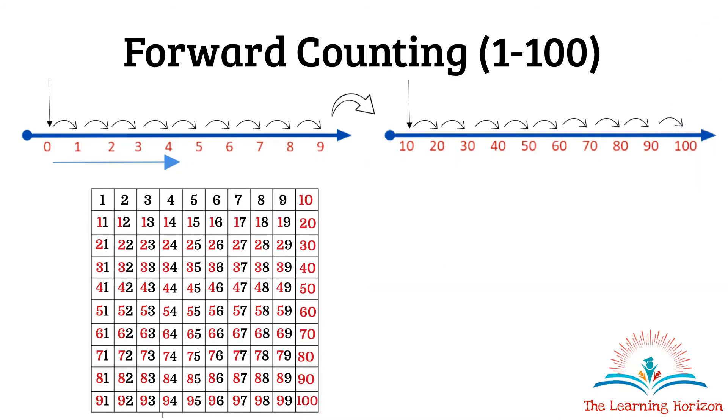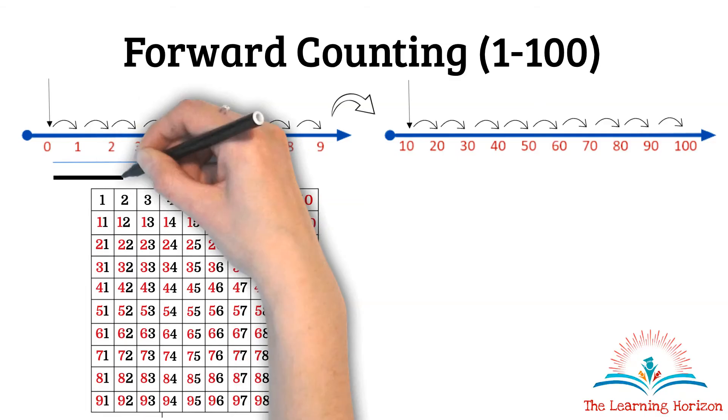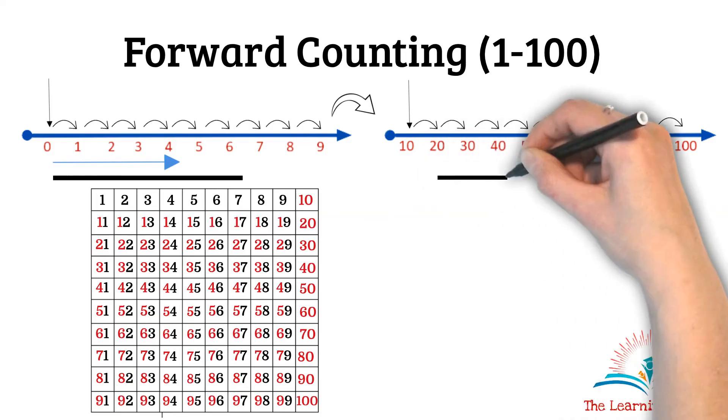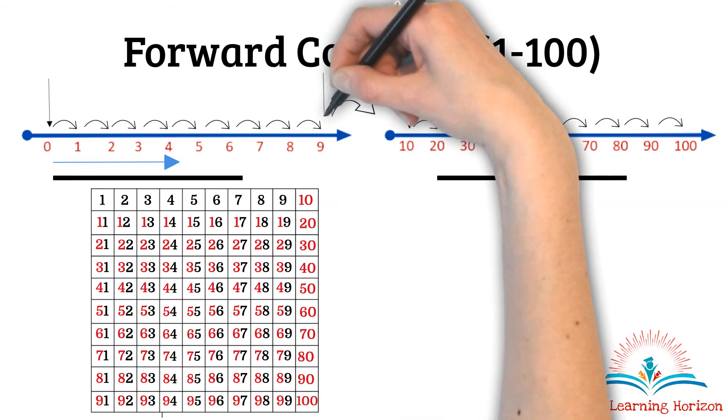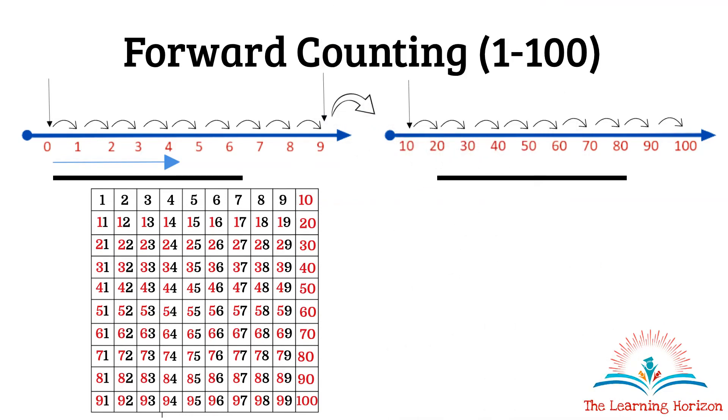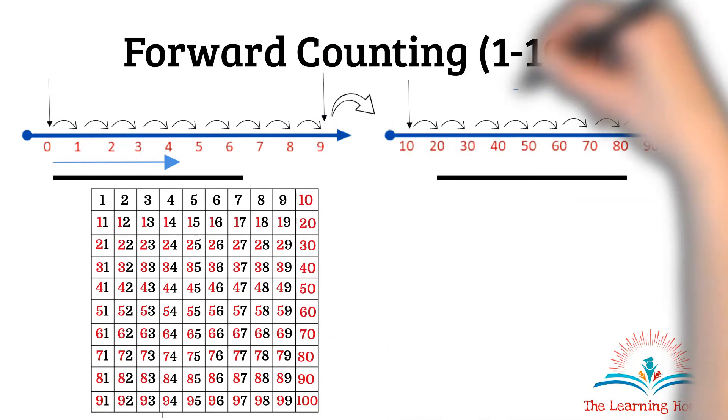What do we observe here? If you see, we have repeated 0 to 9 for each of these tens. We have repeated all these digits in order. And whenever we reach 9, which is the end of all of our digits, we move on to the next 10.